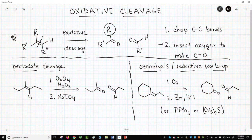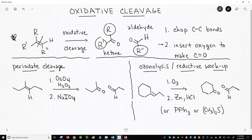If you have two R-groups, you get a ketone. Just one R-group, that piece will be an aldehyde.